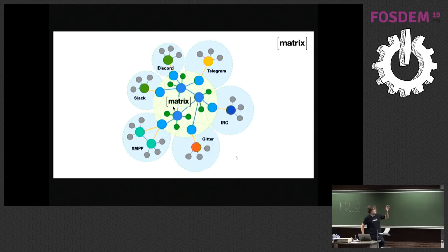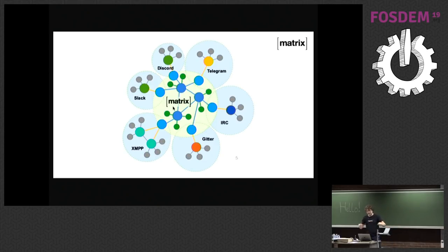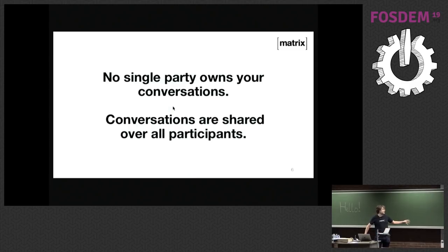Relative to XMPP, Matrix is ideologically and technically very different. Matrix is all about syncing conversation history — replicating it between servers rather than passing messages. If I'm talking to you on your own Matrix servers, everybody gets a replica of the room. It's just like Git — in fact it uses the same data structures as Git. Rather than a centralized model where conversation happens on a single server, Matrix replicates it over all participating servers, so no single party owns the conversations.